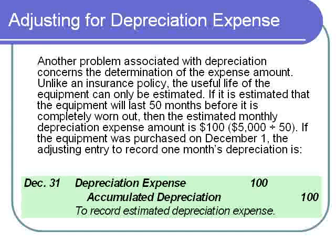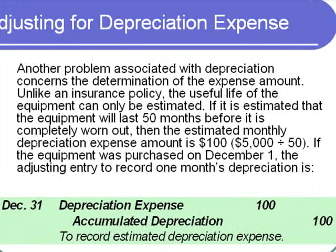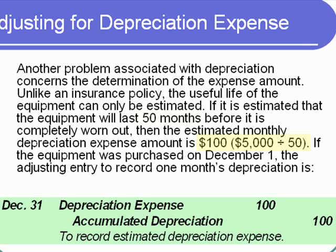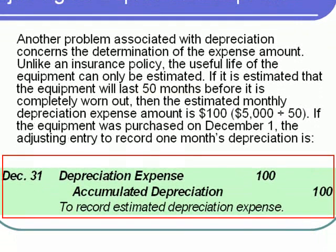Unlike supplies, where we count at the end of the period to determine how much is left, the equipment is all still there — it has just become somewhat more worn. If we estimate that this equipment will last 50 months before it's completely worn out, then the estimated monthly depreciation expense would be $5,000 divided by 50 months, or $100 per month. If the equipment was purchased on December 1st, the adjusting entry to record one month's depreciation would be credit accumulated depreciation for $100 and debit depreciation expense for $100.